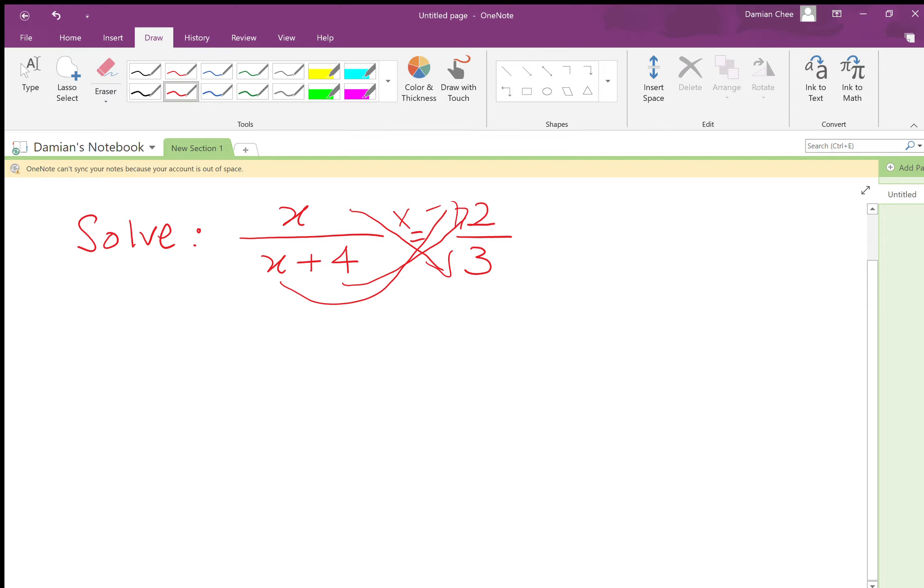So over here we will have 3x equals 2 times x plus 4.